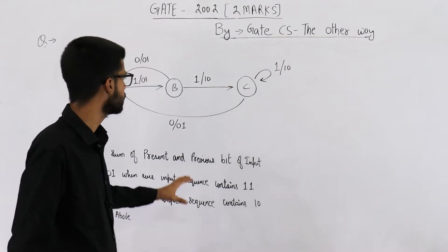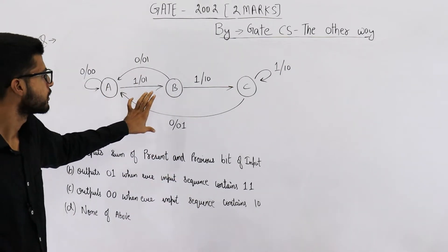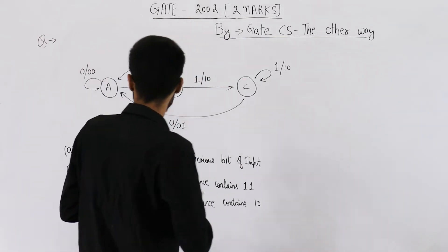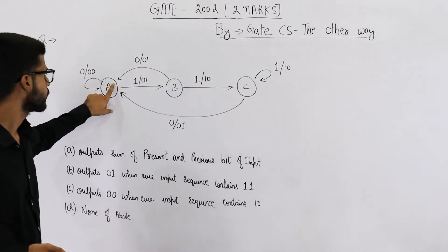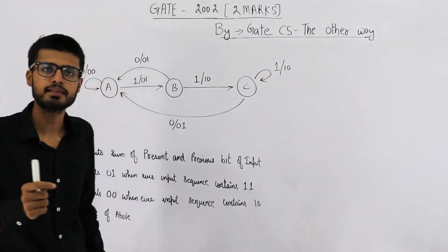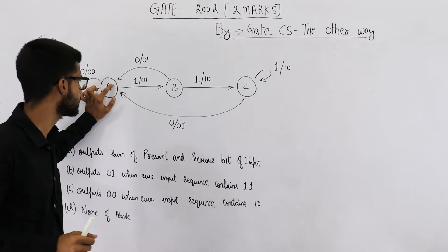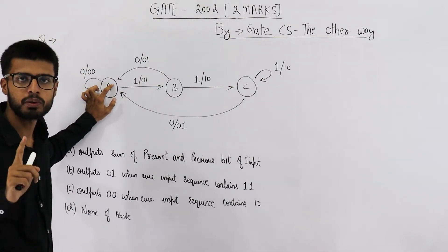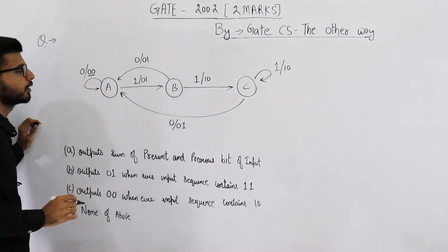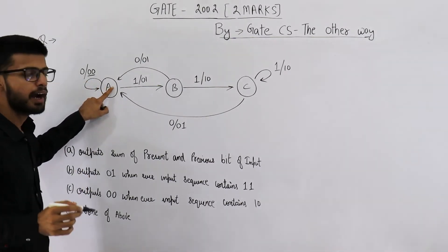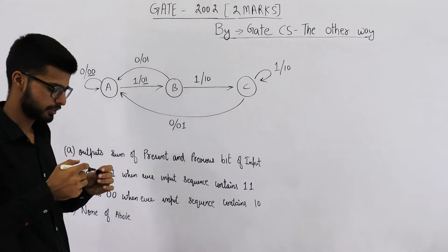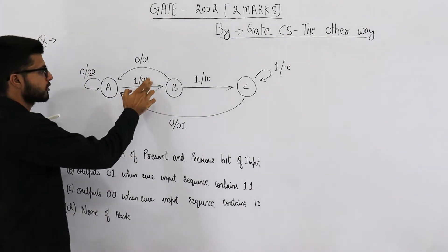I've drawn the finite state machine given in the question. This machine is actually a Mealy machine. It is a Mealy machine because the output of this machine depends on the current state as well as the input bit. If the current state is A and input bit is 0, the output will be 0 0. But if current state is A and input bit is 1, the output will be 0 1. So the output is actually dependent on the input string also.